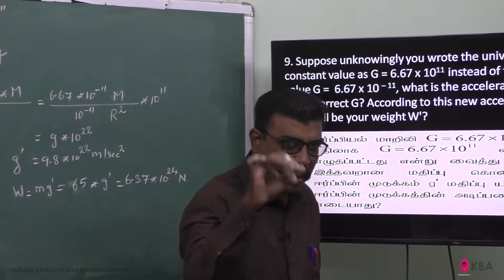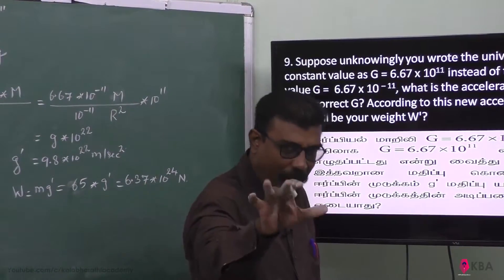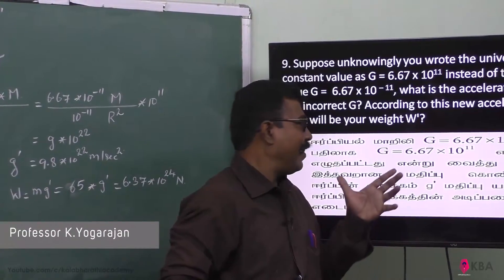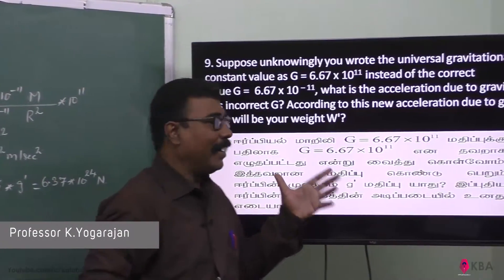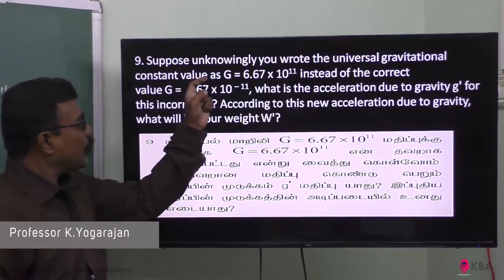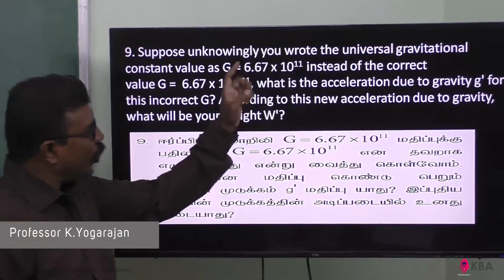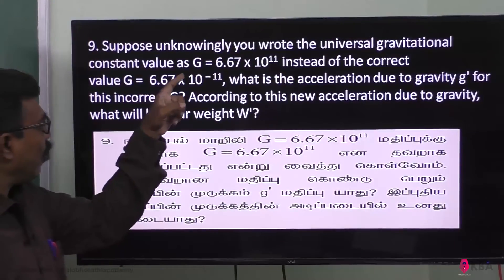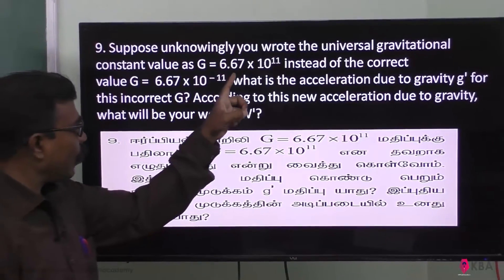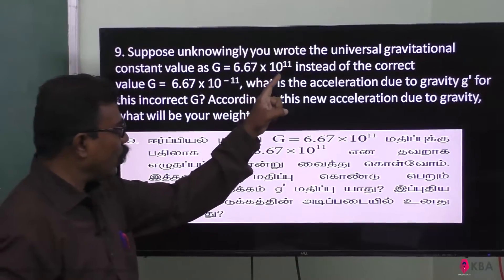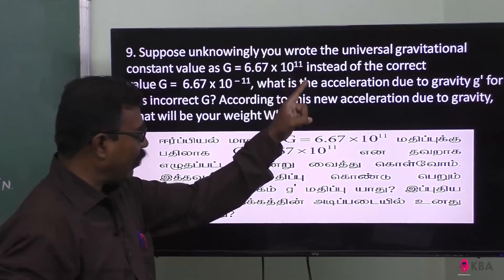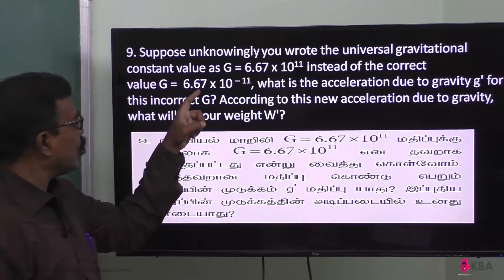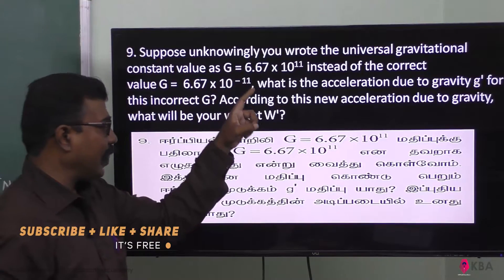I am going to ask you one simple common sense problem. Suppose the universal gravitational constant value of G is equal to 6.67 into 10 to the power of 11, instead of the correct value G is equal to 6.67 into 10 to the power of minus 11.